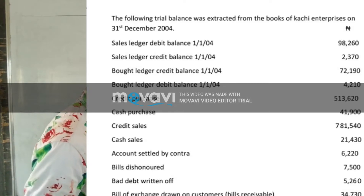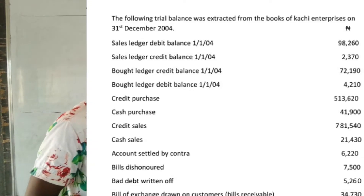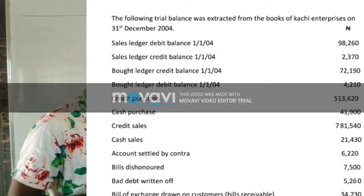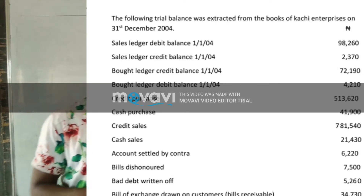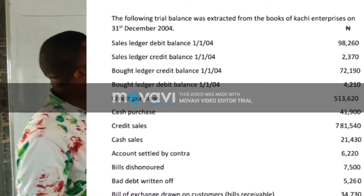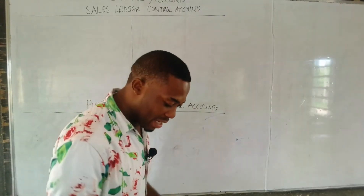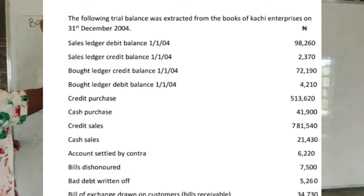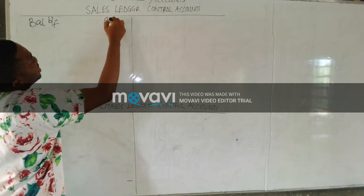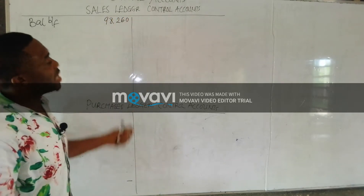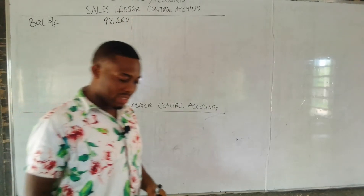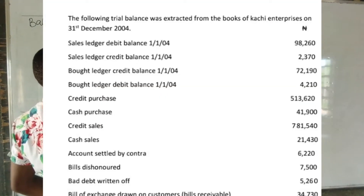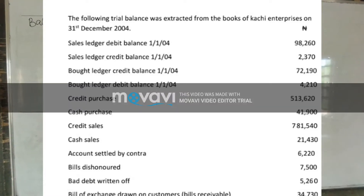The question on your screen shows that the following balances were extracted from the books of Catchy Enterprises on 31st December 2004. The first item is sales ledger debit balance at 1st January 2004 — we post this as balance brought forward of $98,260 on the debit side of the sales ledger. The next item is sales ledger credit balance at 1st January, posted as balance brought forward of $2,370.